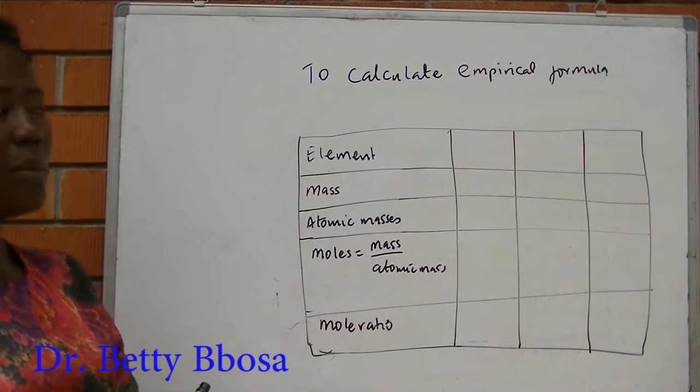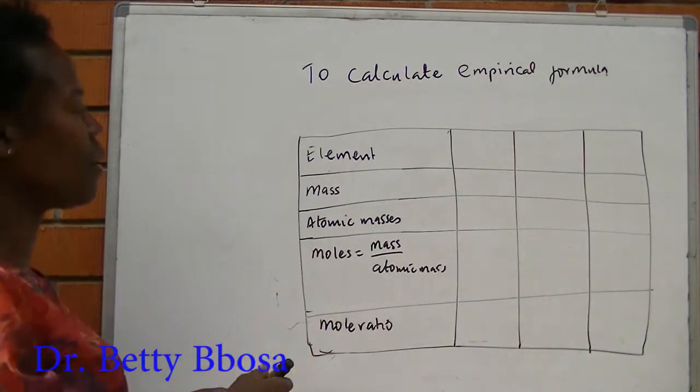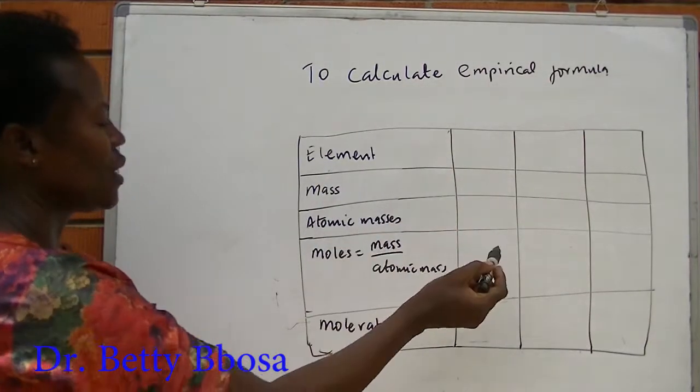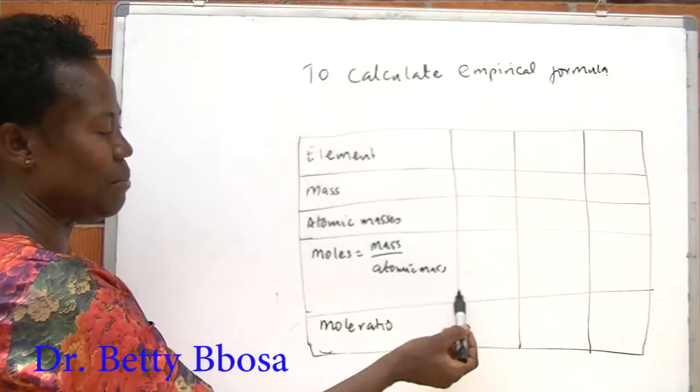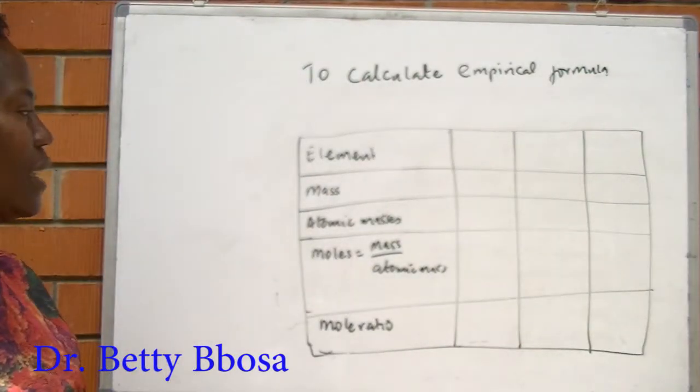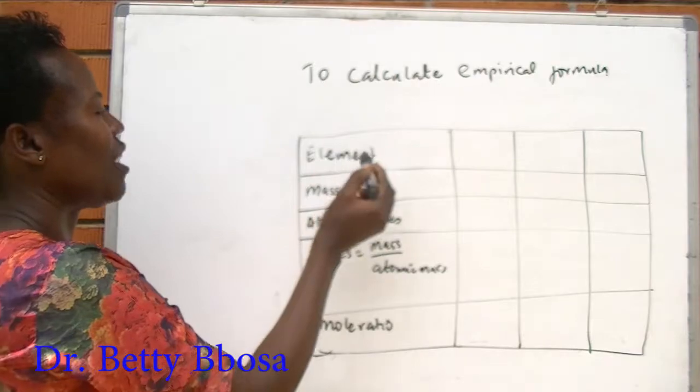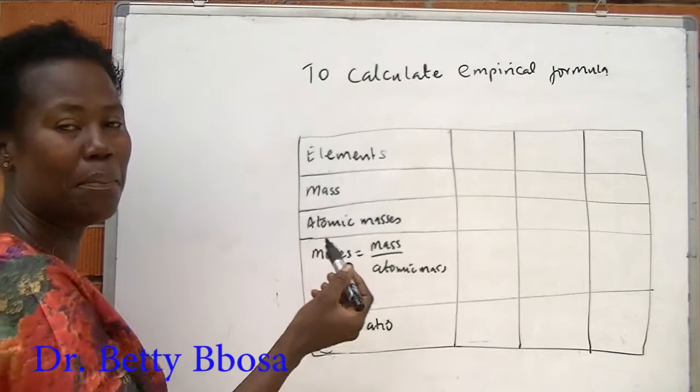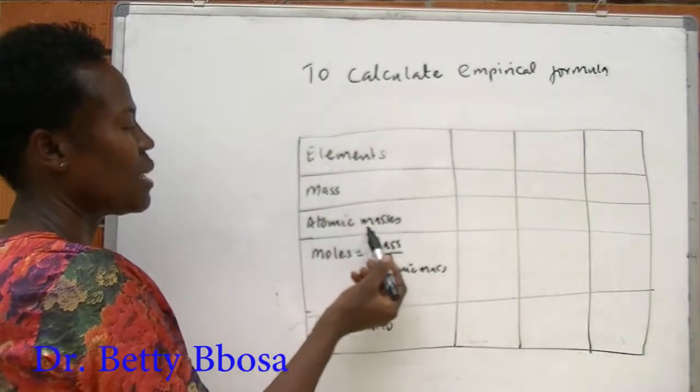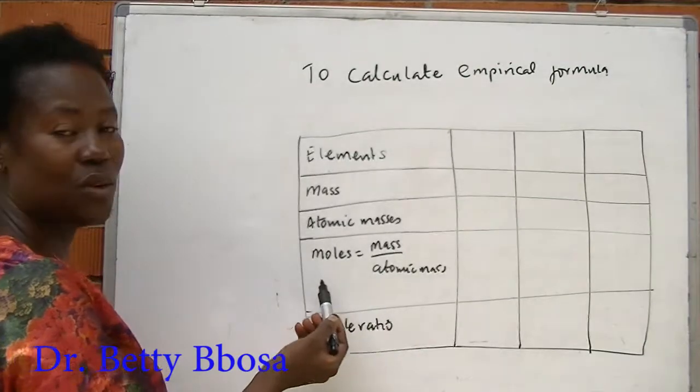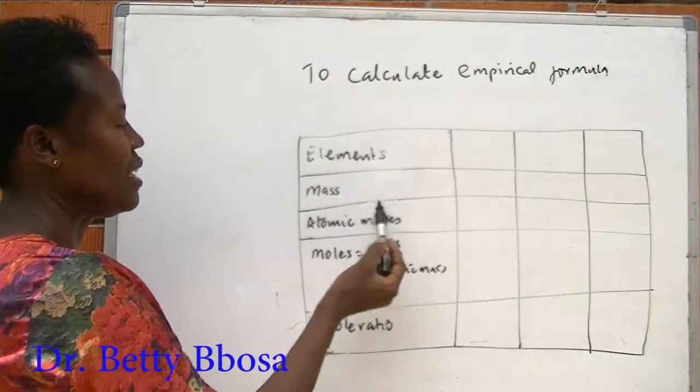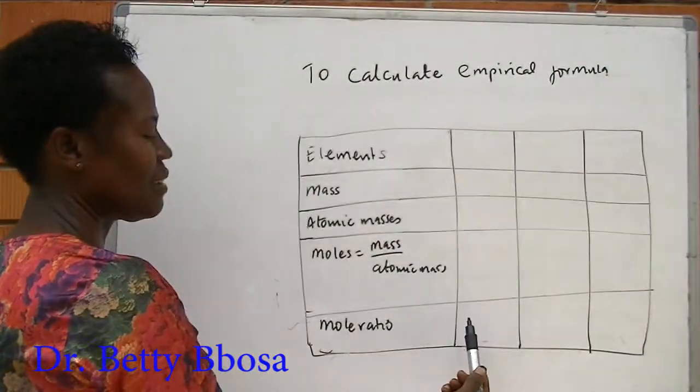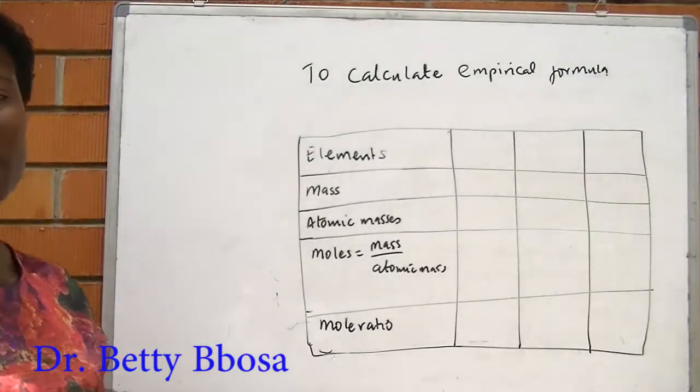To calculate an empirical formula, you must have a table in this format. It must have five rows: one, two, three, four, five. The fourth is slightly bigger, also the fifth one. And the first row must have elements given to you. Masses, those are their percentage composition by mass. Atomic masses, you also list. Then you calculate the moles, where the moles is the mass over atomic mass. And then among these ones, choose the smallest and divide it throughout here to get the mole ratio.